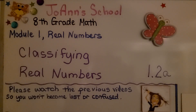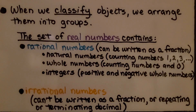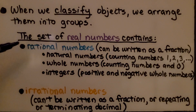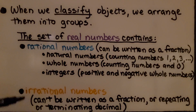Classifying Real Numbers, Lesson 1.2a. When we classify objects, we arrange them into groups. The set of real numbers contains rational numbers and irrational numbers.